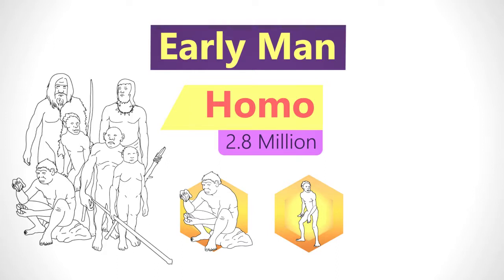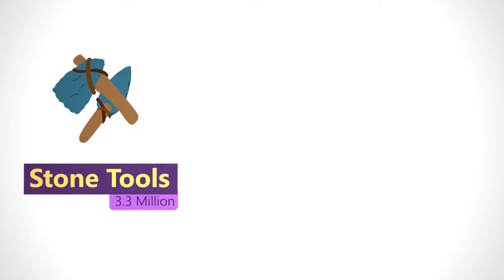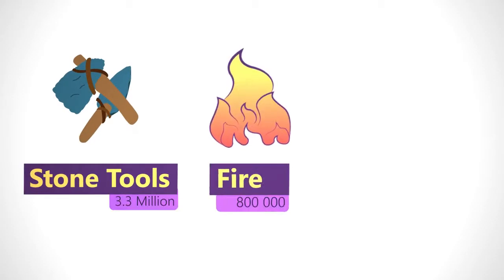The genus Homo first arose in Africa, but we are currently unsure whether it was in southern Africa or eastern Africa. 3.3 million years ago, we were using stone tools, and we started using fire somewhere between 1.8 million years ago and 800,000 years ago.